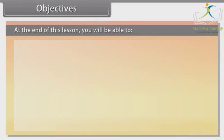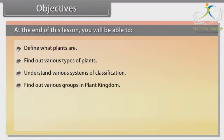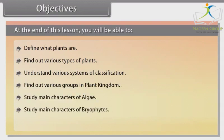At the end of this lesson, you'll be able to: define what plants are, find out various types of plants, understand various systems of classification, find out various groups in the plant kingdom, study main characters of algae, study main characters of bryophytes, and identify main characters of bryophytes.